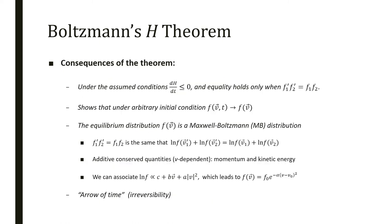Now, what are the consequences? First, we proved that dH/dt is lower than or equal to zero, and this equality holds only when f1' f2' equals f1 f2, which is the equilibrium condition we stated before. It also shows that this functional has a minimum value at equilibrium condition and arbitrary conditions will tend to it asymptotically.